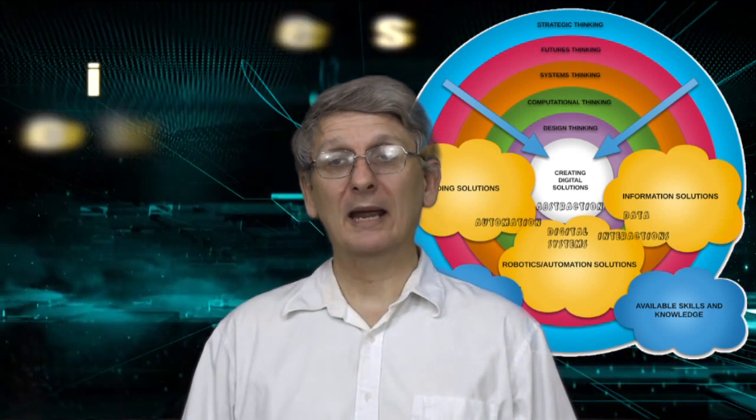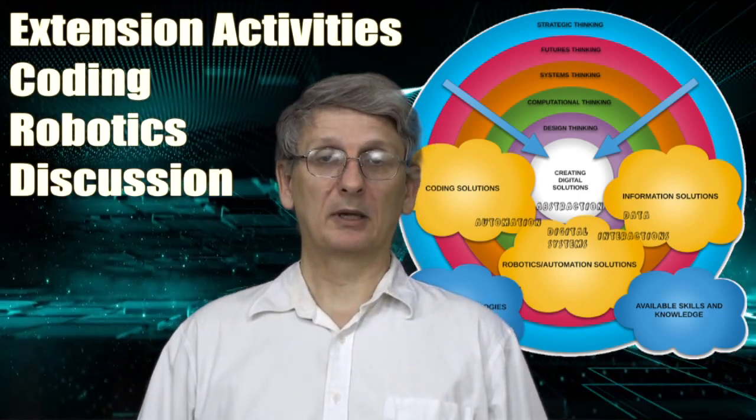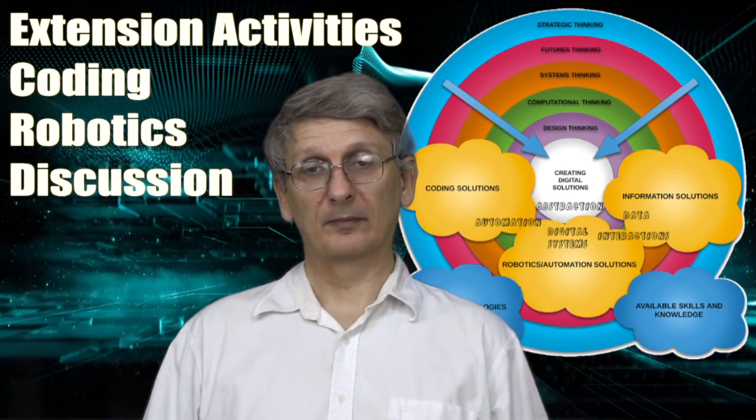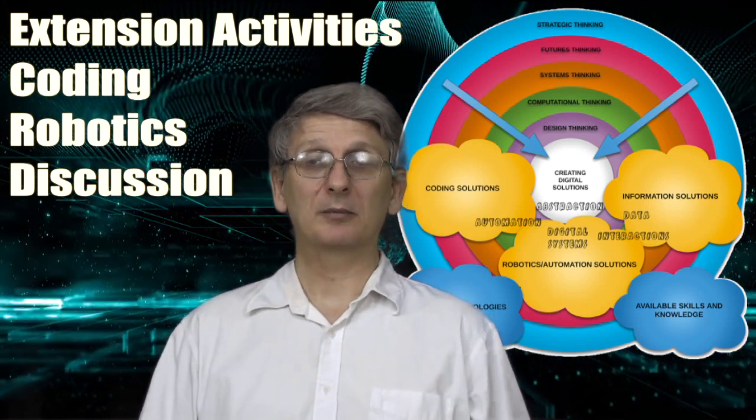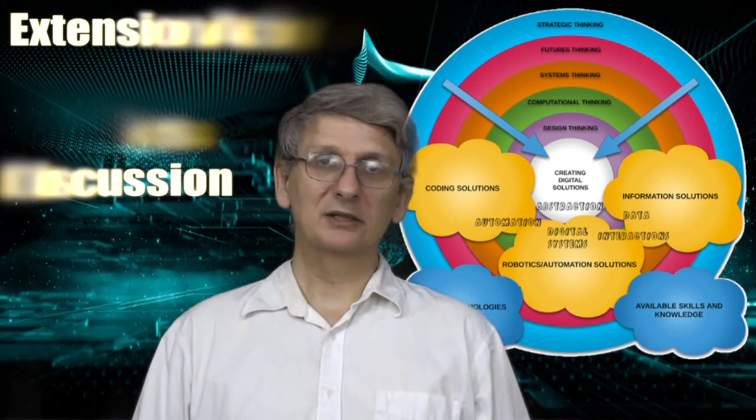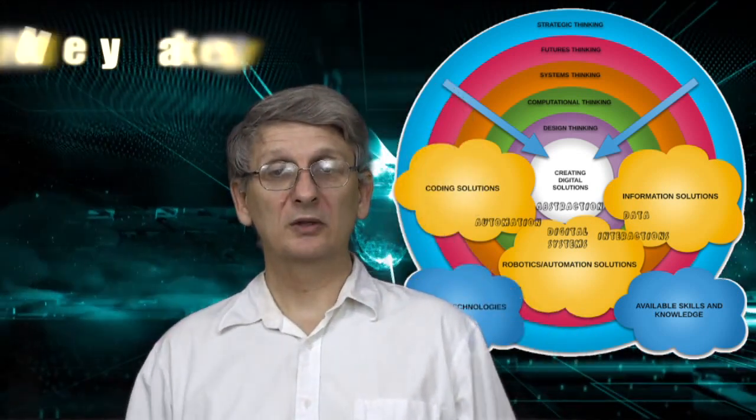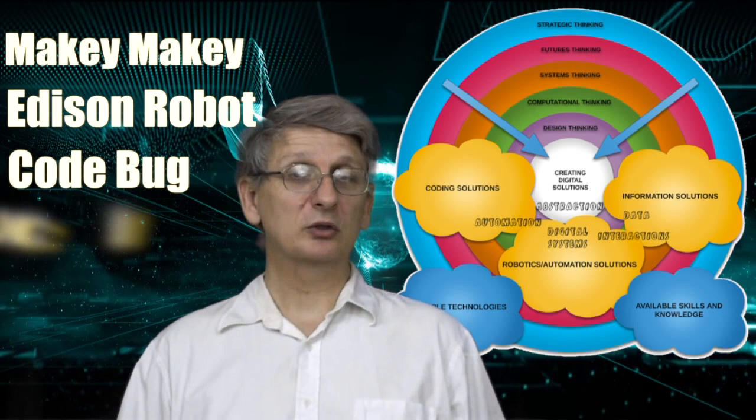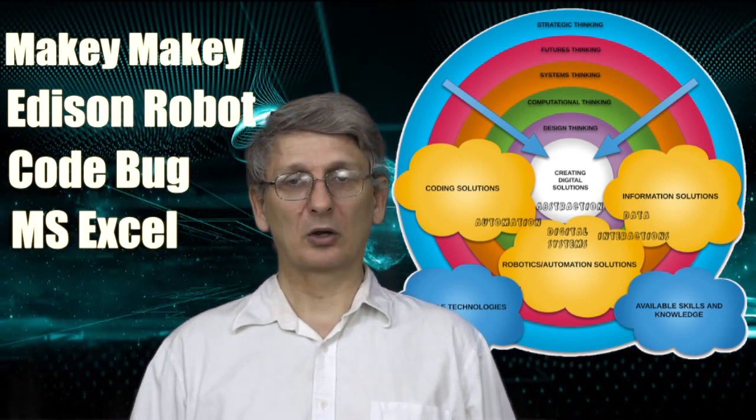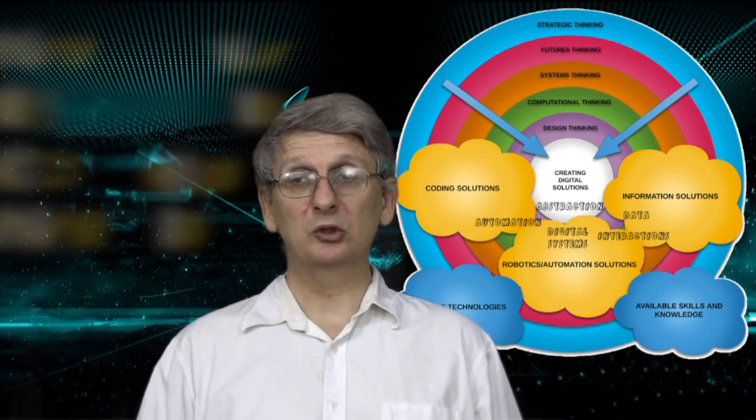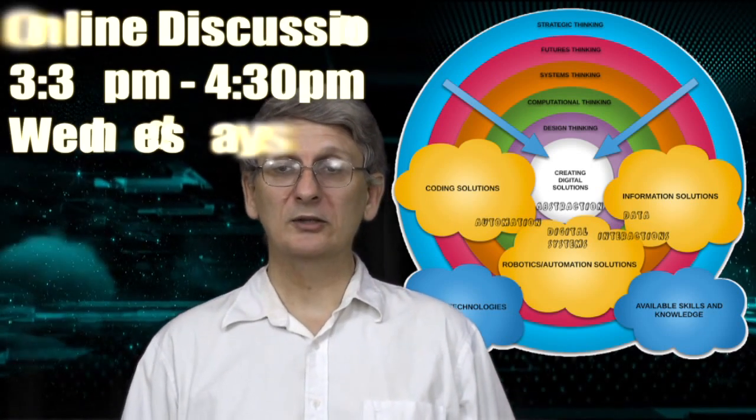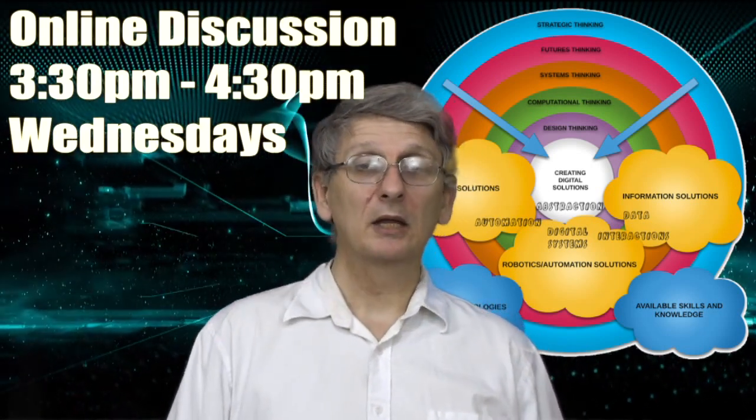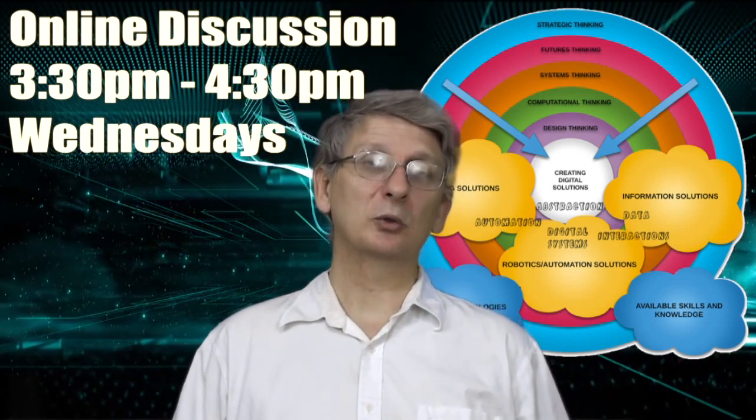But each module also has three one-hour extension activities that you can choose between: coding, robotics, or online discussion. Each extension activity will take about an hour to complete. And while you are welcome to complete more than one, this is not an expectation. Coding and robotics extension activities do require some tools. And we have chosen the Makey Makey interface boards, the Edison Robotics Kit, the Code by Microcomputer, and Microsoft Excel spreadsheet application as these technologies. You should try to have these tools available for use during the course if you wish to engage with the extension activities. Online discussions will occur on Wednesday afternoons from 3:30 to 4:30pm using Collaborate and will focus on addressing your questions for the modules that week.